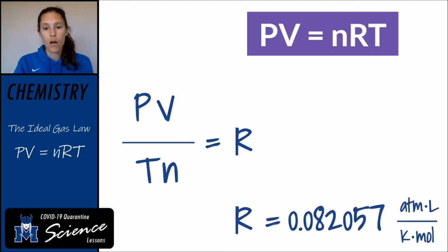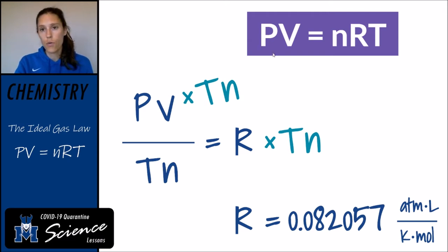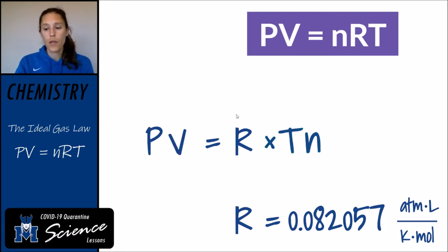You will often see R also in the units of kilopascal·liter per Kelvin·mole, and you can easily convert that. If we take the equation PV/TN = R and multiply both sides by temperature and moles and rearrange a little bit, our temperature and moles cancel out, and we get PV equals nRT.